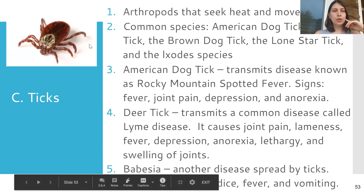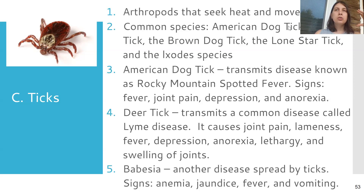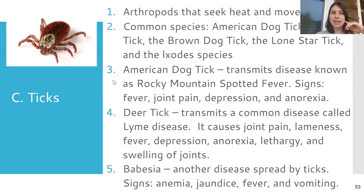Ticks are arthropods with eight legs, kind of like little spiders that drink blood. They're pretty common here in the South because they seek heat — when it gets cold outside they try to get on anything warmer than the environment. You'll also find them in summer because people wear less clothing when hiking, giving ticks more exposed skin to attach to. It's really easy to pick up ticks in wooded areas, brush, and bushes.